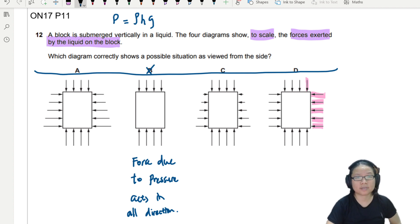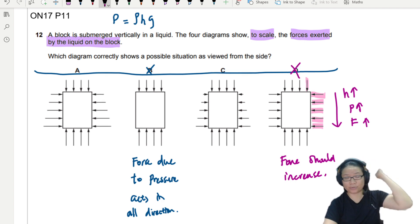So you will notice that the deeper we go, the pressure should increase. So as you travel down, H increase, pressure increase, force should increase. But never increase also. This force is constant. So the force should increase as height increases. So D is wrong. All right, so now you're left with A and C.